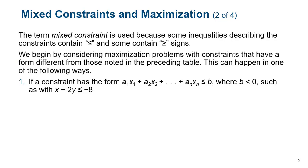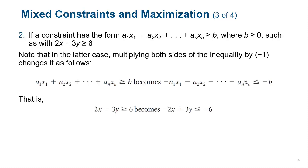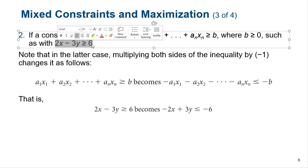It becomes a problem when we have mixed constraints where some of them are less than or equal to and some of them are greater than or equal to. Luckily, an inequality flips to the other direction simply by multiplying by negative one. So if we have a constraint like 2x minus 3y is greater than or equal to 6,